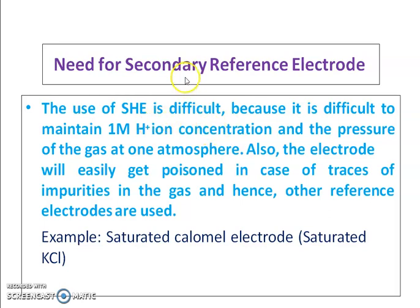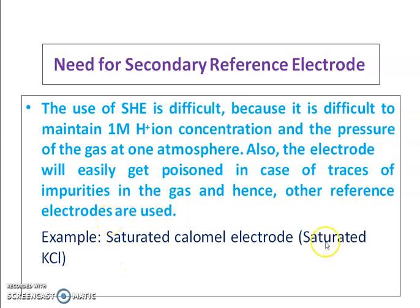Sometimes a secondary reference electrode — the saturated Calomel electrode — is needed. The conditions required to maintain the SHE are very difficult: keeping the acid concentration at one molar and the gas pressure at one atmosphere is hard to sustain. Also, if the hydrogen gas contains trace impurities, the electrode gets poisoned. Hence we use a saturated Calomel electrode.